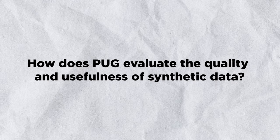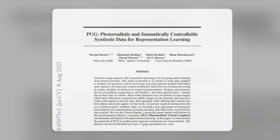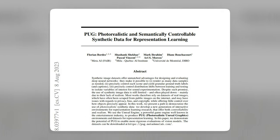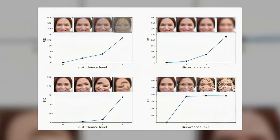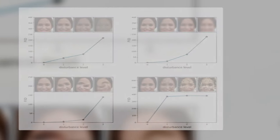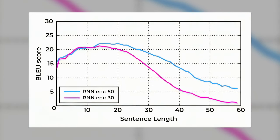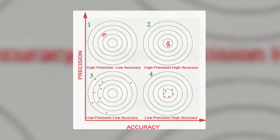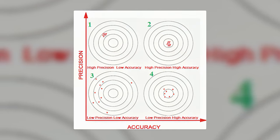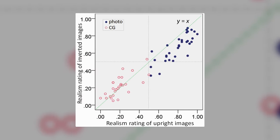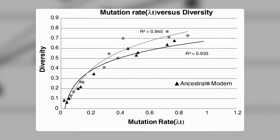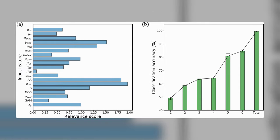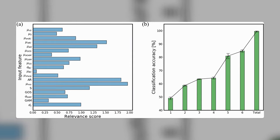PUG evaluates the quality and usefulness of synthetic data using various metrics and human judgments. The metrics include FID score, which measures how similar the synthetic images are to real images; BLEU score, which measures how similar the synthetic captions are to human-written captions; and QA accuracy, which measures how well the synthetic questions test the understanding of the synthetic images. Human judgments include realism rating, diversity rating, and relevance rating — measuring how realistic, diverse, and relevant the synthetic data appear.